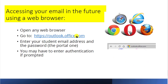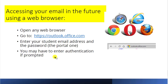If you want to access your email in the future on the Outlook site, go to any web browser and type in Outlook.office.com. Enter your student email address and portal password, and you may have to authenticate. You may also use the Outlook app on your phone or tablet and follow the same procedure.